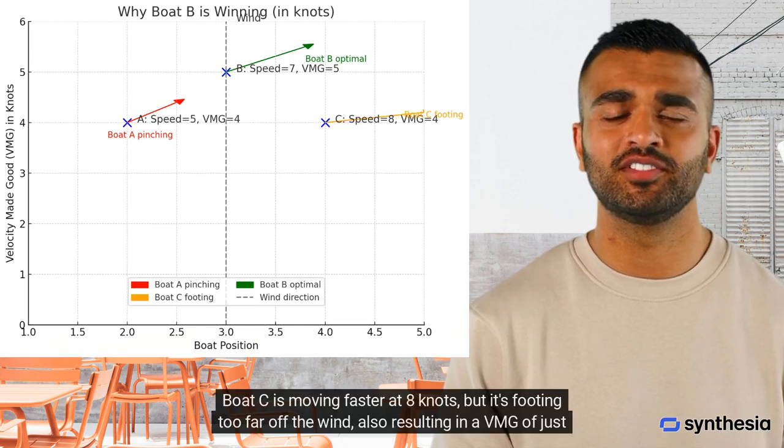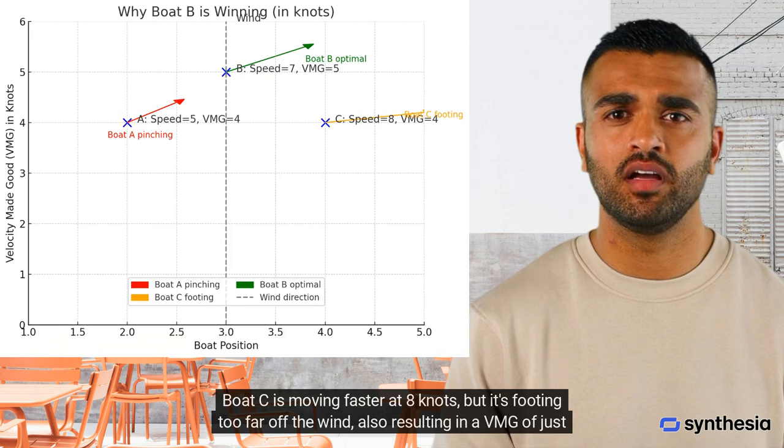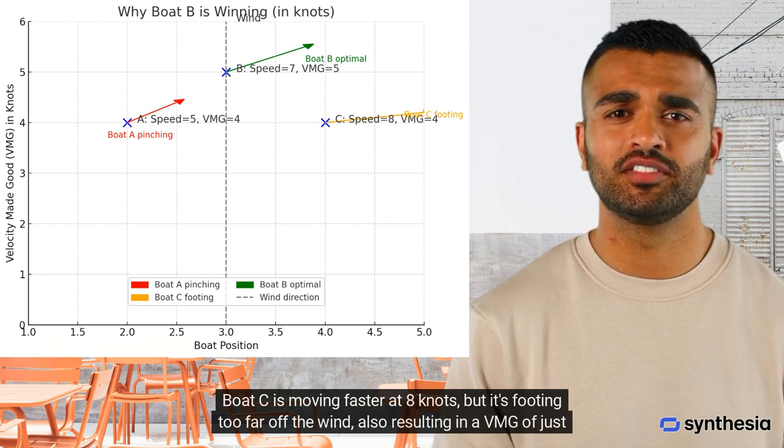Boat C is moving faster at 8 knots, but it's footing too far off the wind, also resulting in a VMG of just 4 knots.